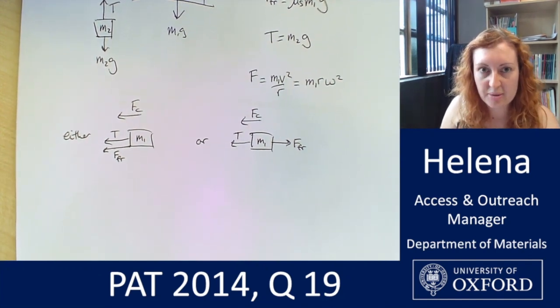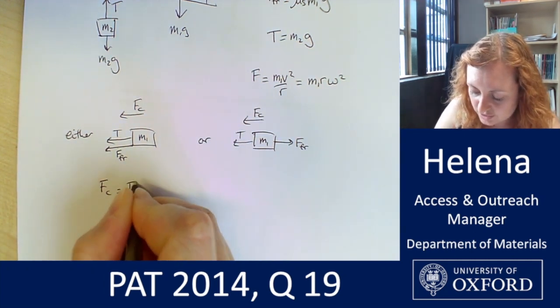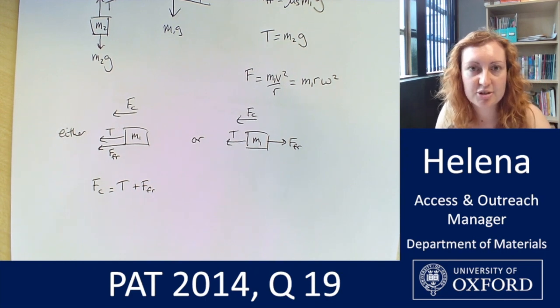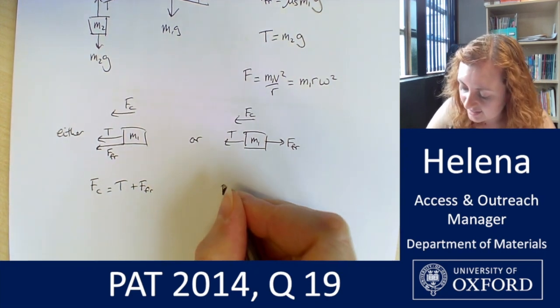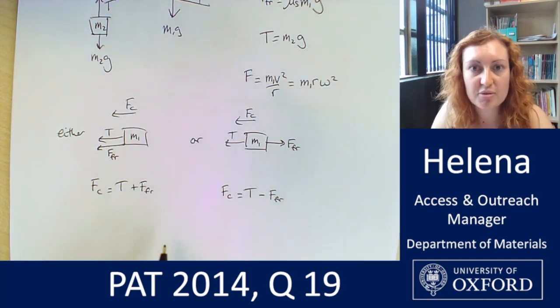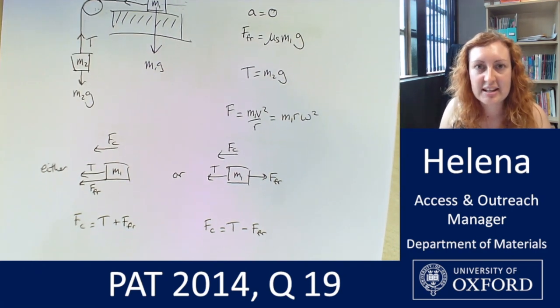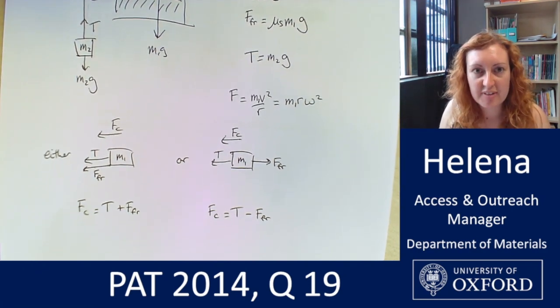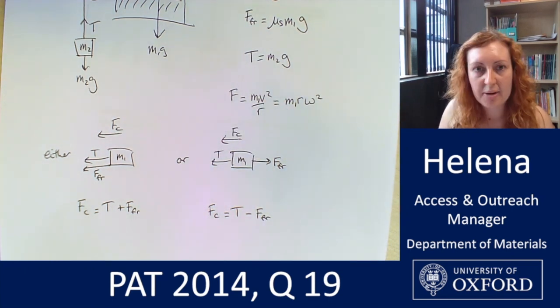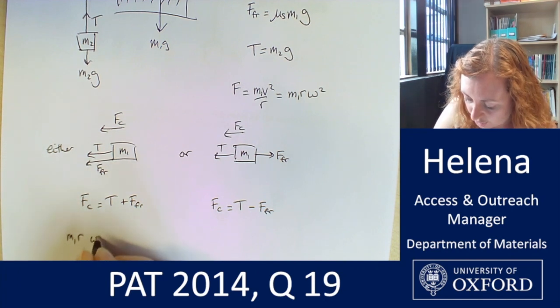So let's set up our two equations. So we have our net force F_C is equal to T plus F_FR, frictional force in this case. And in this case, we have that it is T minus our frictional force. So we've got sort of like a plus minus situation going on here. Let's substitute in our values. So we have our equation for our circular motion force here. So we have m1 r omega squared.